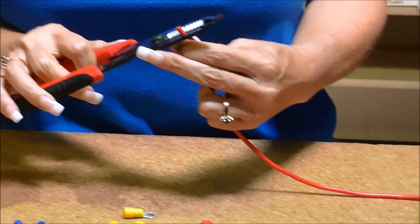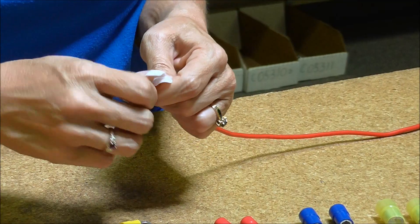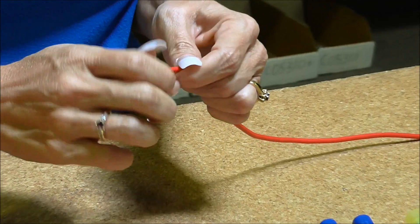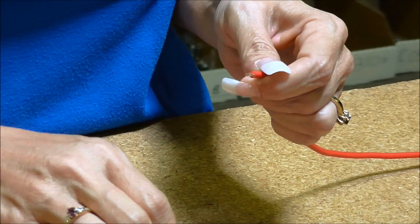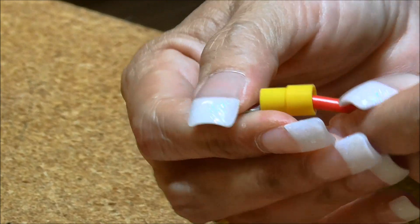I'm going to strip the end. Pull the jacket off. Twist the wire up. Insert my wire into the barrel.